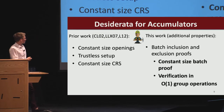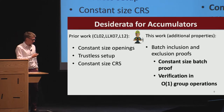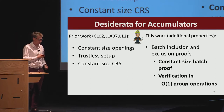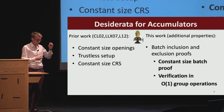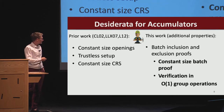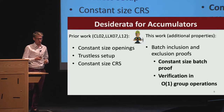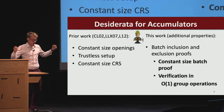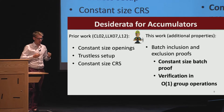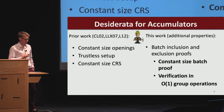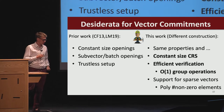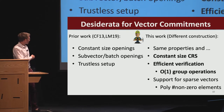The desiderata for accumulators: we already have a bunch of cool properties from prior work—constant size openings, a trusted setup, a small common reference string. What we add is the ability to give batch inclusion and exclusion proofs: short proofs for larger statements, which are also very efficient to verify with only a constant number of group operations.